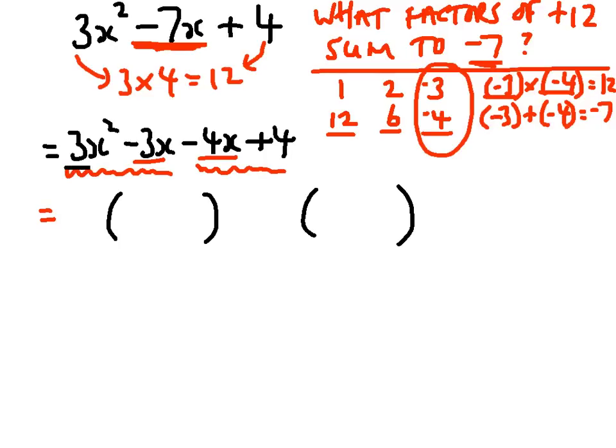So let's have a look at the first bracket first. What have 3x squared and 3x got in common? Well, they've both got 3 in them, they've both got an x in them. So 3x is going to be my common factor of those two.